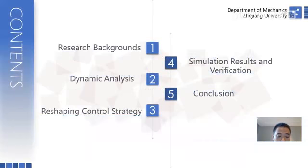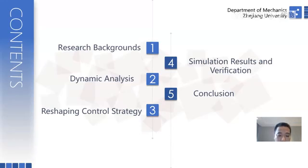I would like to introduce my research work in five parts. In the first part, I will introduce the research background so that you can have a simple understanding of my research work. In the second part, I will introduce an ecological pre-derprix system model which considers both time delay, stochastic disturbance, and environmental mutation. The third part introduces the design and results of the control strategy of the stationary probability density function of a stochastic ecological pre-derprix system with Markov jump and time delay. The simulation and verification results of our research will be shown in the fourth part. Finally, I will summarize our main research work in the final part.